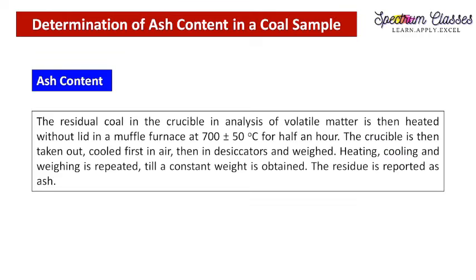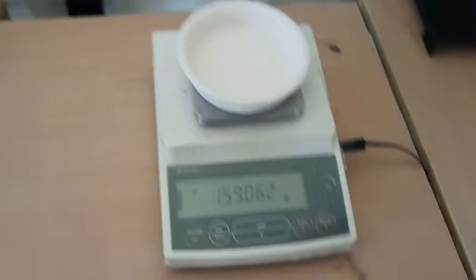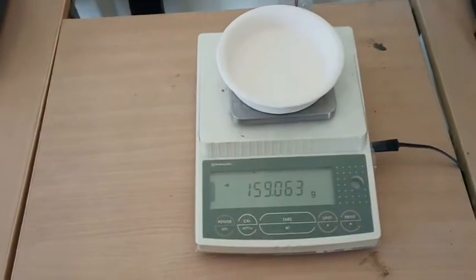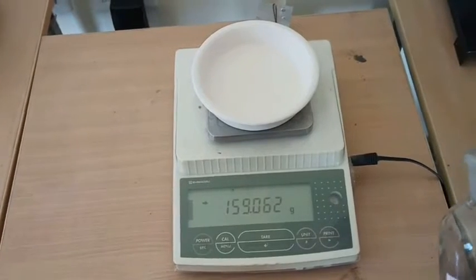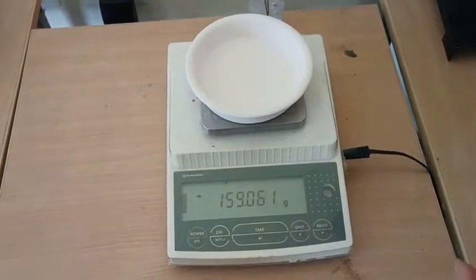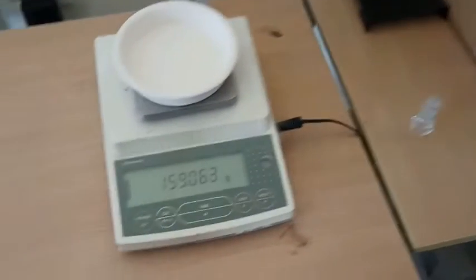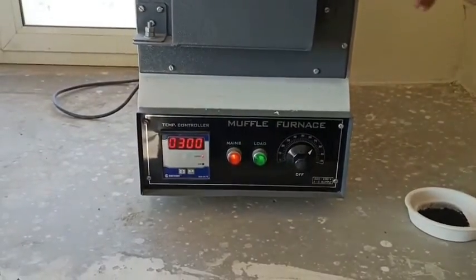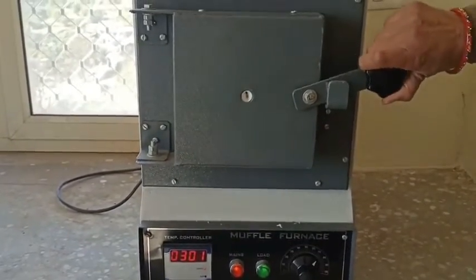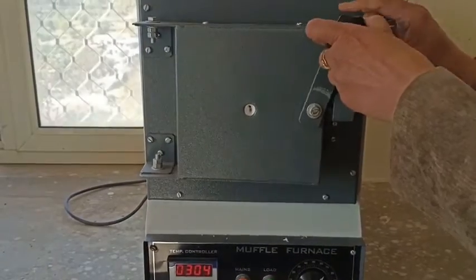I have written the procedure for how we are proceeding with this experiment, and rather than reading it I will show you the lab activity so you will better understand. This is the weight of the crucible — we are going to put this value in the table. Here is the coal sample which we obtained after removal of the volatile material in the second experiment.